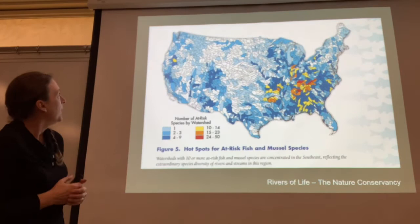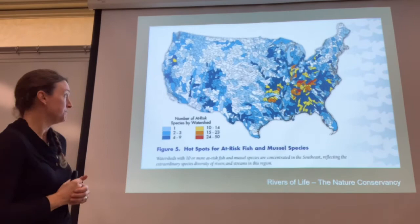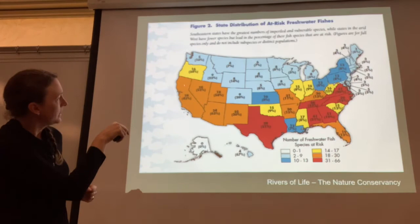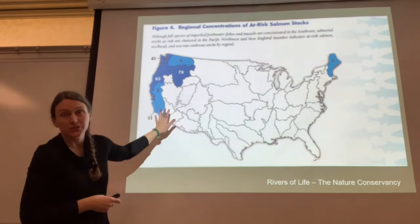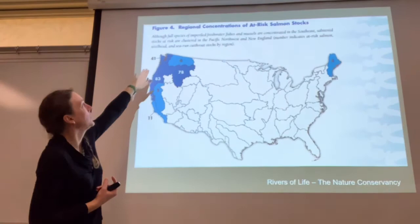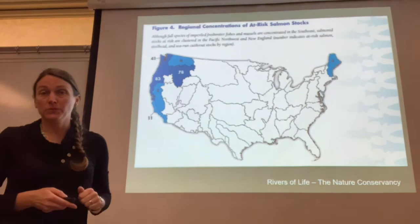Here we can see hot spots for at-risk fish and mussel species. We're doing pretty well in the Pacific Northwest for some of these organisms, but there are really cool hot spots of biodiversity in parts of the southeast that are also at risk of extinction. If you zoom in at the number of freshwater fish species at risk, Washington looks okay. But what we do have are at-risk salmon stocks. Salmon wouldn't necessarily be considered purely freshwater species, which is why they're not on the other graphs. This is where the Pacific Northwest has major problems, and why the Nature Conservancy has doubled down in its efforts to save salmon populations — some of the papers we'll read are about salmon in particular.